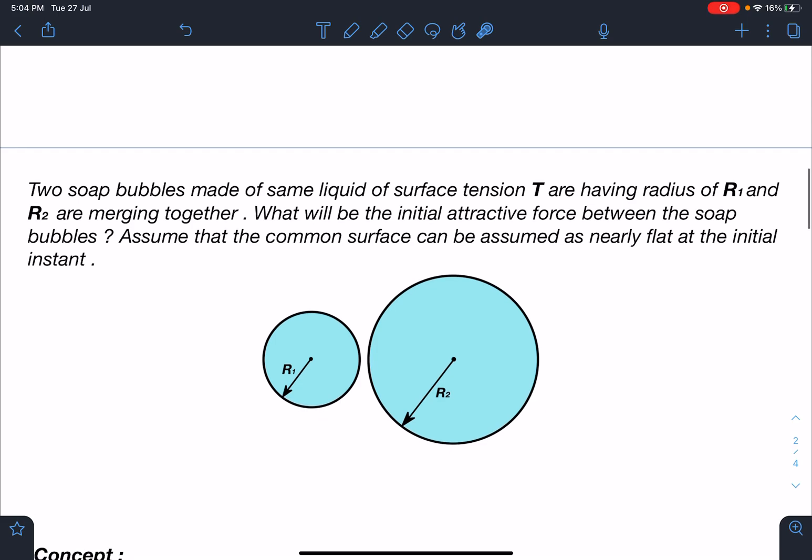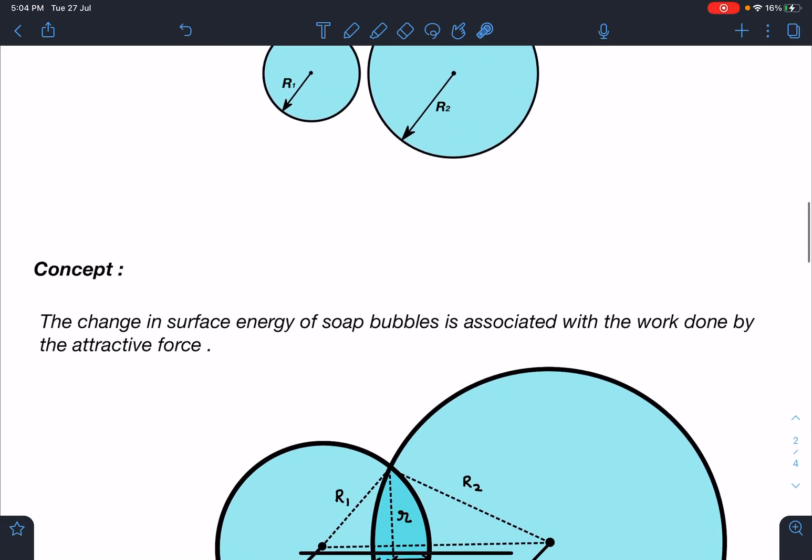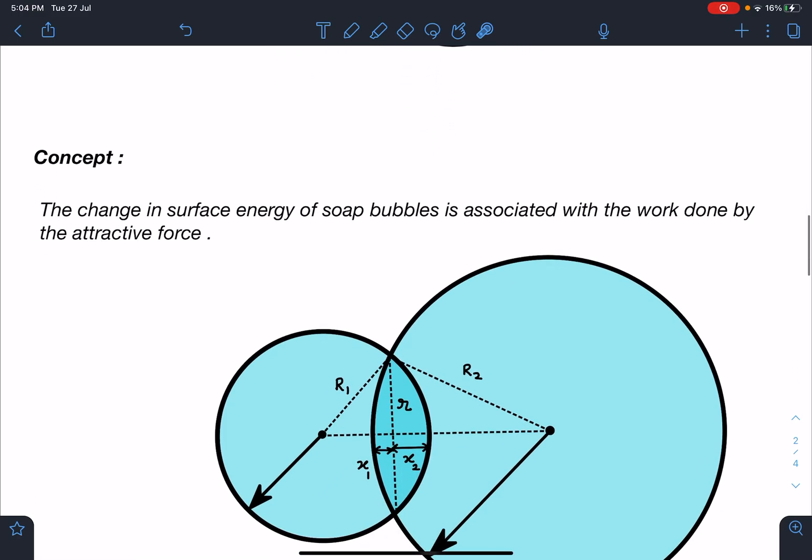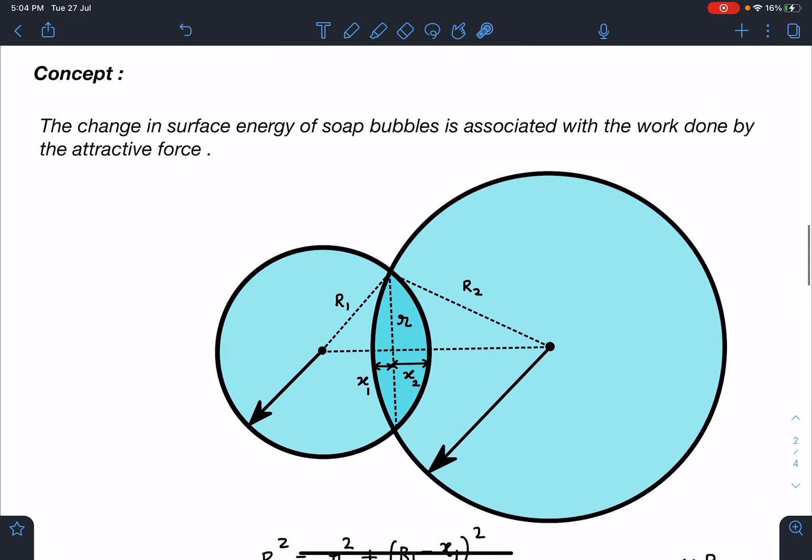Assume that the common interface can be assumed as nearly flat at the initial instant. So this is the assumption we have to make. The concept part of this problem is that the change in surface energy of soap bubbles is associated with the work done by the attractive force. So whatever force we have to calculate here is related to the change in surface energy.